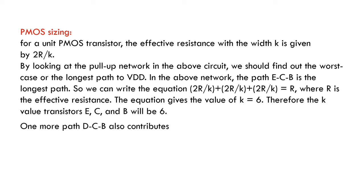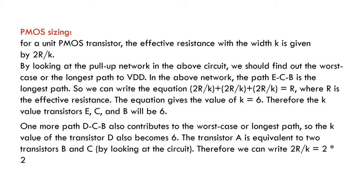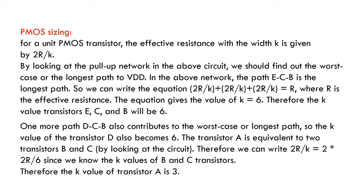One more path DCB also contributes to the worst case or longest path, so the K value of transistor D also becomes 6. The transistor A is equivalent to two transistors B and C by looking at the circuit. Therefore we can write 2R/K equals 2 times 2R/6, since we know the K values of B and C transistors. Therefore the K value of transistor A is 3.